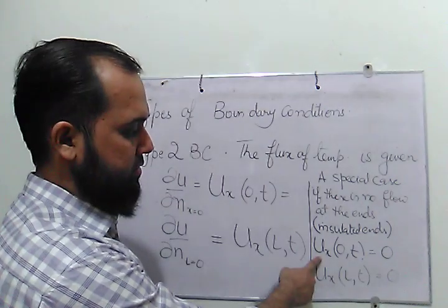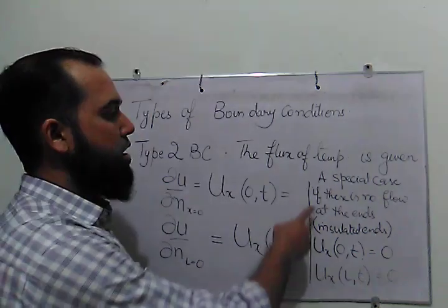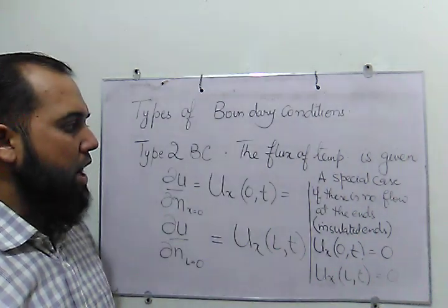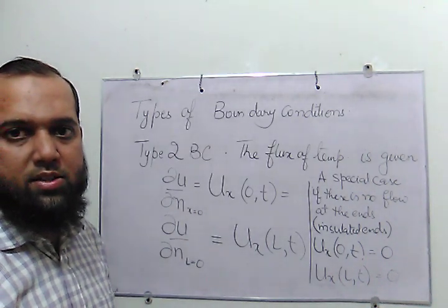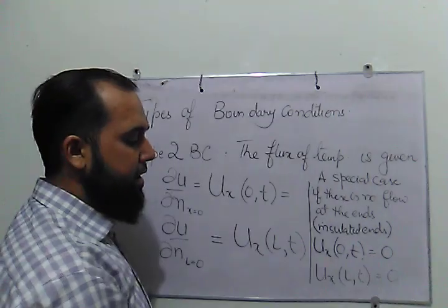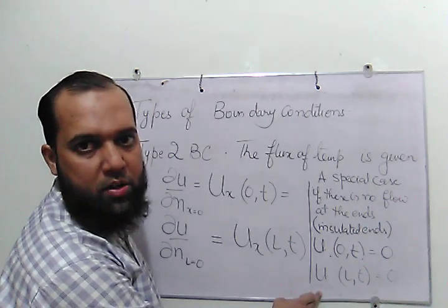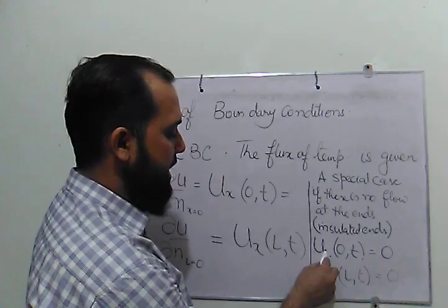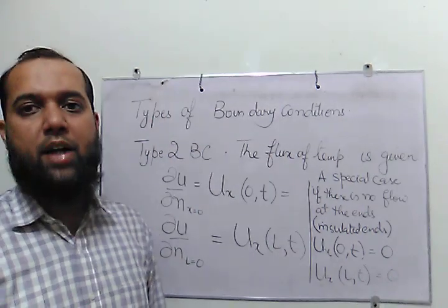This makes the equation homogeneous. If there is some number here, the boundary condition becomes non-homogeneous. For the second type of boundary conditions where the flux of temperature is given, a special case is if there is no flow at the end — we can achieve this physically by insulating the ends. In that case, we write the boundary condition as the derivative equal to zero. If we remove this derivative, it becomes a type 1 boundary condition with zero degrees at both ends. But with the derivative here, it means there is no flow of heat at the ends. So this is type 2 boundary condition.